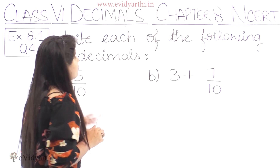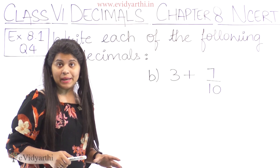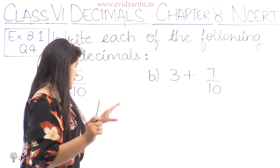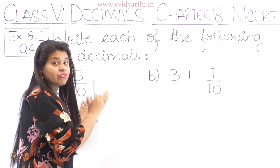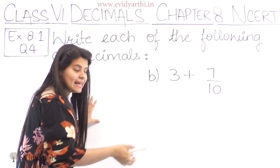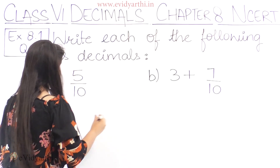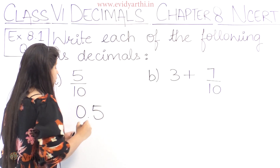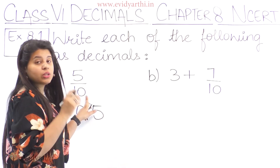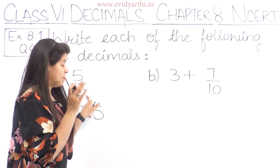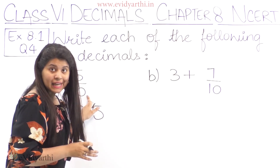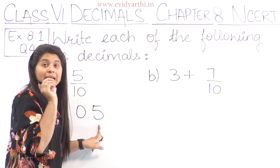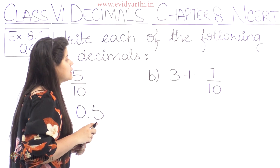The first part says 5 upon 10. Now 5 upon 10 means 5 divided by 10, so we simply write this as 0.5. How? Because we know if the denominator is 10, then the number on top will be in the tenths place.